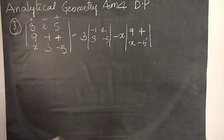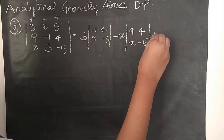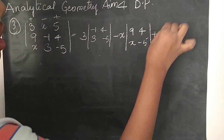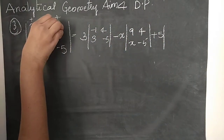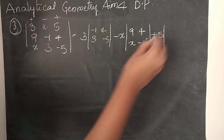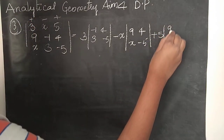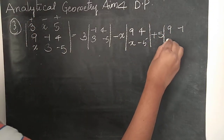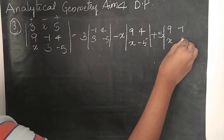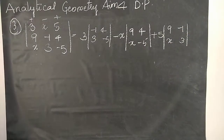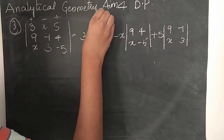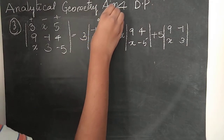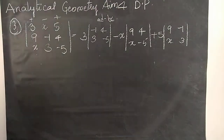Next, plus 5: this row and column not considered — 9, minus 1, x, 3. For each 2x2 determinant we apply AD minus BC. So cross multiplying AD minus BC for each sub-matrix.